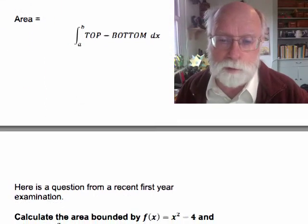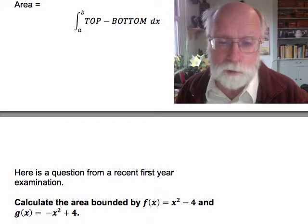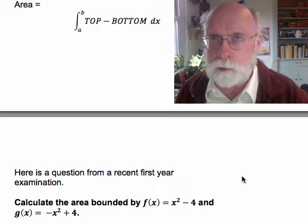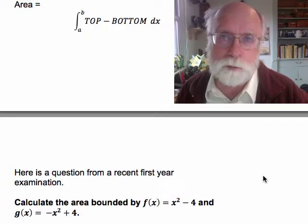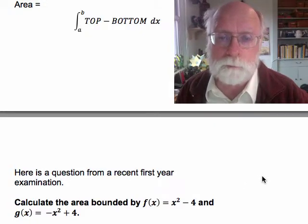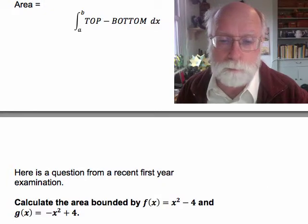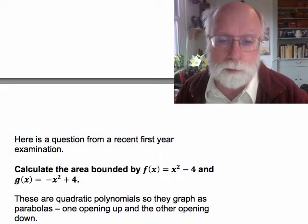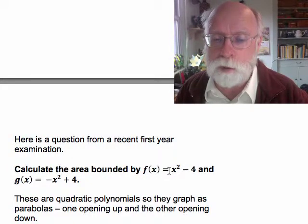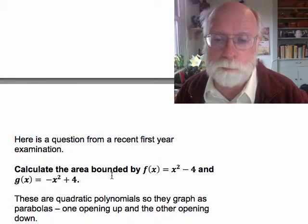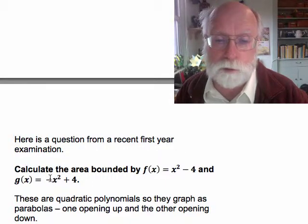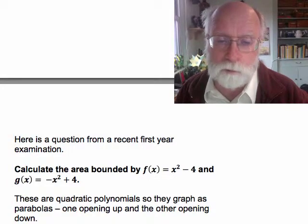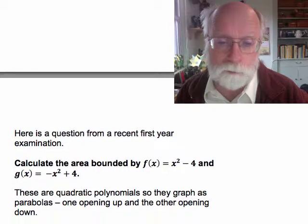Here's a question from a recent first year examination at Carleton University. Calculate the area bounded by f of x equals x squared minus 4 and g of x equals minus x squared plus 4. These are quadratic polynomials and so they'll graph out as parabolas. The one with the positive coefficient of x squared will open up. The one with the negative coefficient of x squared will open down. So that's what we can work out informally from just looking at the functions themselves.